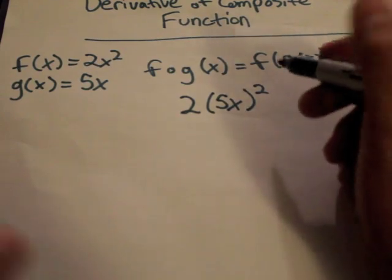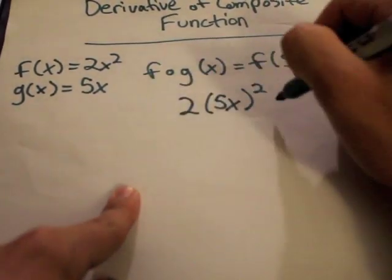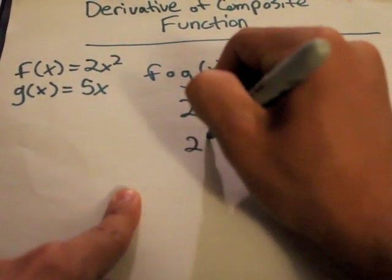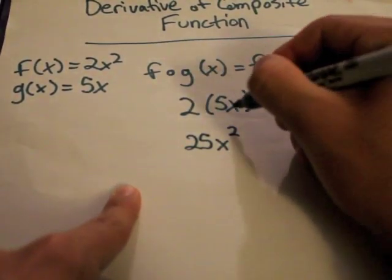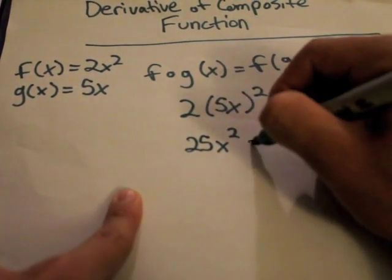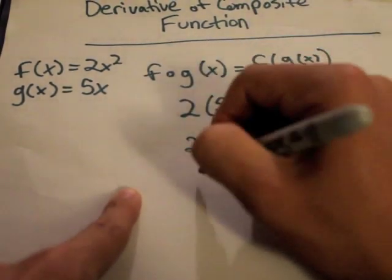And then from there, you can go on and distribute. So 5x squared would equal 25x squared. So 5 times 5 is 25, x times x is x squared. And then you would multiply that whole thing by 2. And when you do that, you get 50x squared.